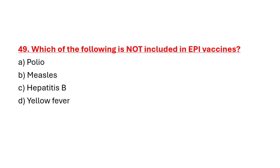Question 49: Which of the following is not included in EPI vaccines? Option A: Polio. Option B: Measles. Option C: Hepatitis B. Option D: Yellow fever. Correct answer is Option D: Yellow fever.